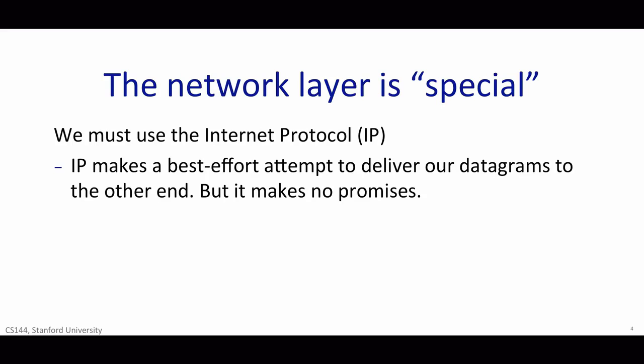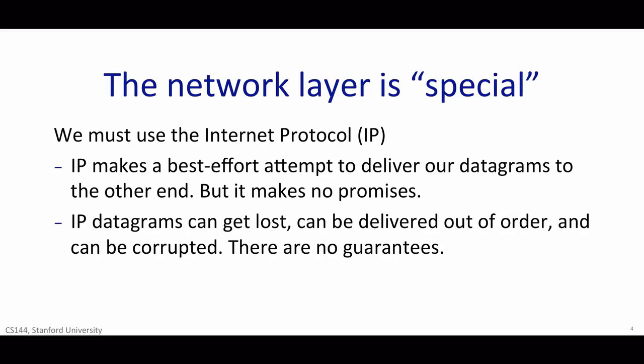First of all, IP makes a best effort attempt to deliver our datagrams to the other end, but it makes no promises. Second, IP datagrams can get lost, they can be delivered out of order, and they can be corrupted. There are no guarantees. This may come as a surprise — you might be asking how can the Internet work at all when the packets are not guaranteed to be delivered? Well, if an application wants a guarantee that its data will be retransmitted when necessary and will be delivered to the application in order and without corruption, then it needs another protocol running on top of IP.